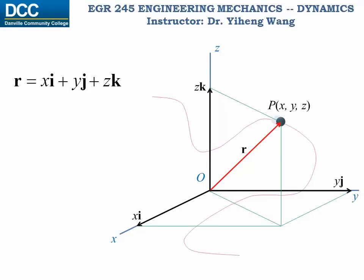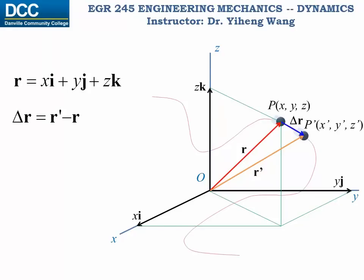So after some time delta t, the particle has moved to a new position p prime, which can be represented by a new position vector r prime. And the change in position can be represented by this vector delta r, which equals to the new position r prime minus the old position r. And the velocity is again defined as the change in position over the change in time, and becomes instantaneous velocity as the time interval approaches zero, and this becomes dr over dt.